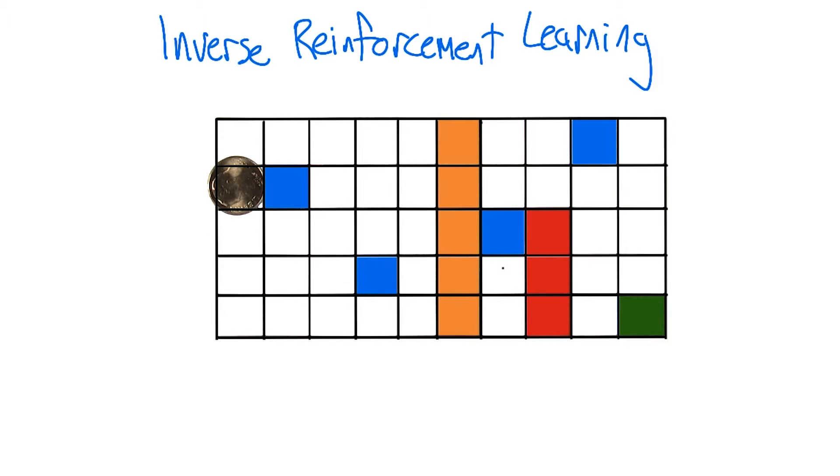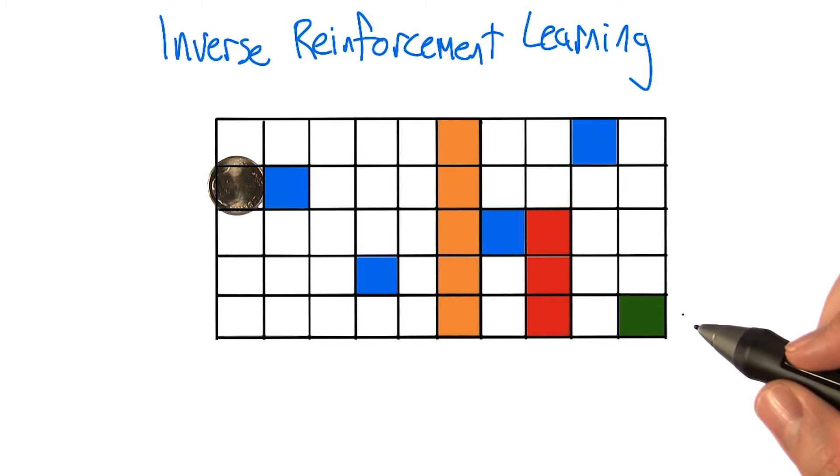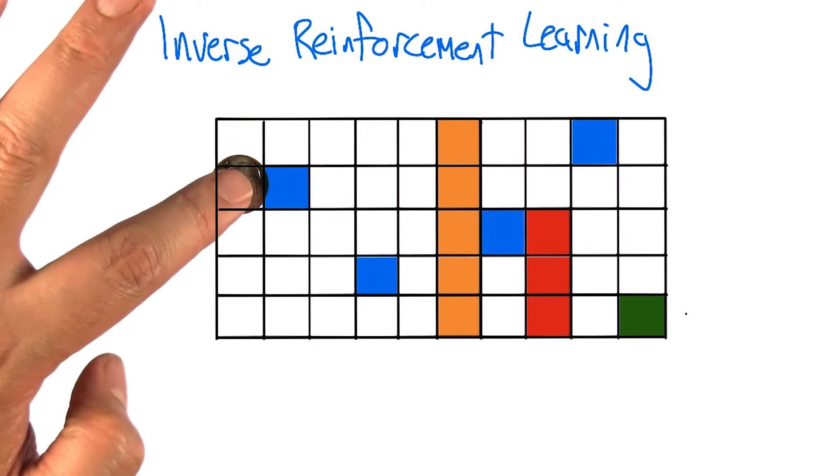We're in a grid world. And you have to learn a reward function. You have to learn what's good or not good to do in this grid, and you're going to get to learn it by watching me. So I'm going to control the agent. The agent's name is Frank. He's going to go like this.